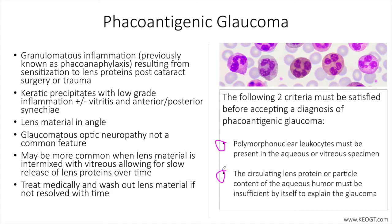Fortunately, glaucomatous optic neuropathy is not common, and proper identification with addressing the retained lens material will often lead to resolution of the pathology. There is some evidence that this disease process is more common when lens material is intermixed with vitreous, allowing for slow release of lens proteins over time.